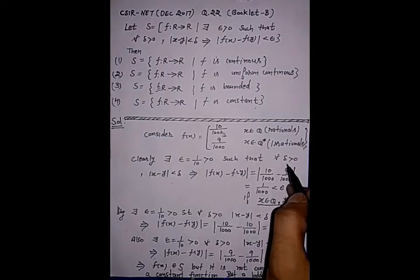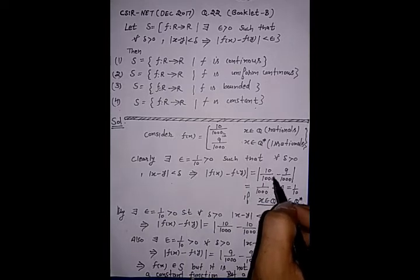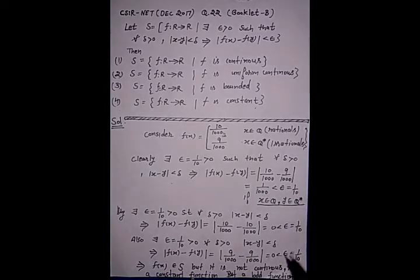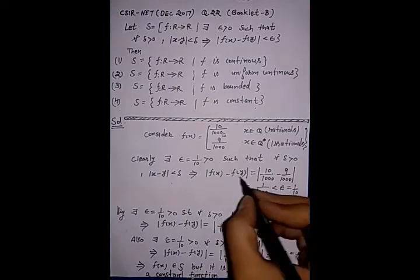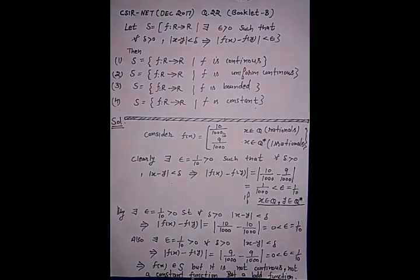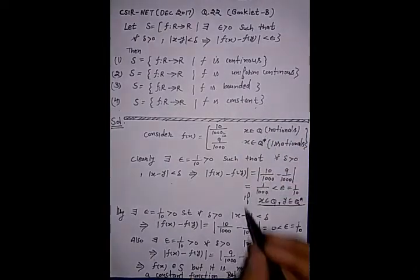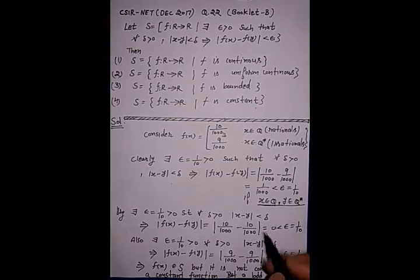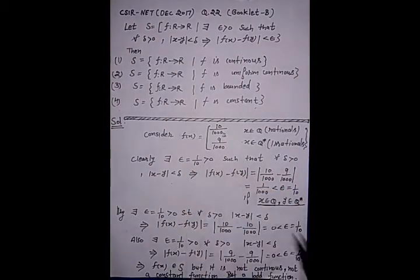Clearly, there exists epsilon equal to 1/10. I select this epsilon such that for each delta positive, mod of X minus Y less than delta: F(X) minus F(Y) equals 10/1000 minus 9/1000, and the difference of these two numbers is 1/1000, which is less than epsilon 1/10. This holds because if X belongs to rationals then F(X) is 10/1000, and if Y belongs to irrationals then F(Y) is 9/1000, so the difference is 1/1000, which is less than 1/10.